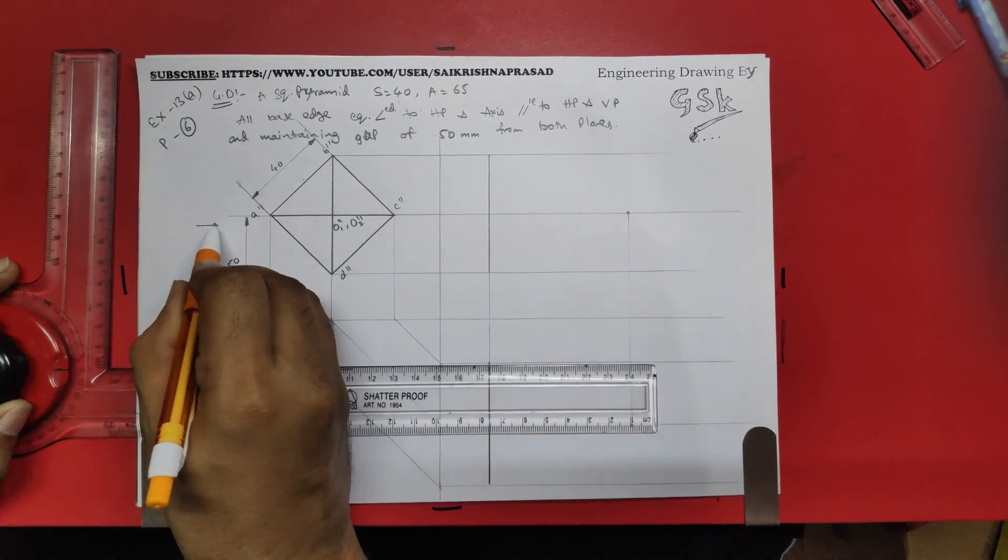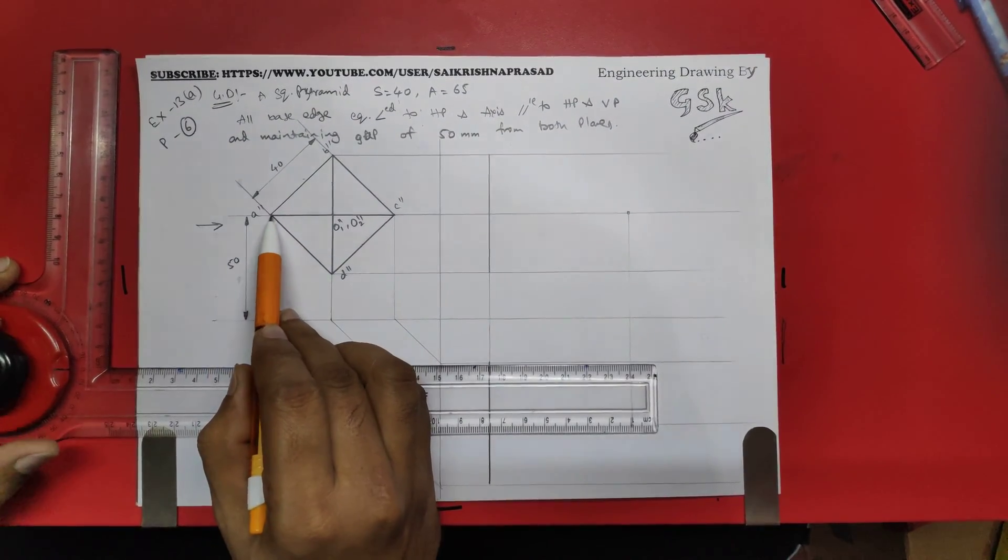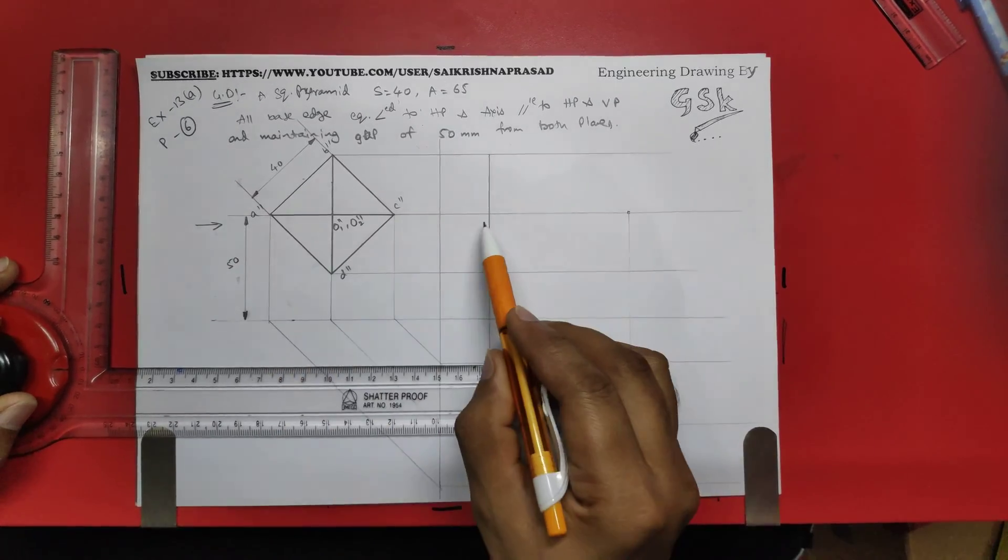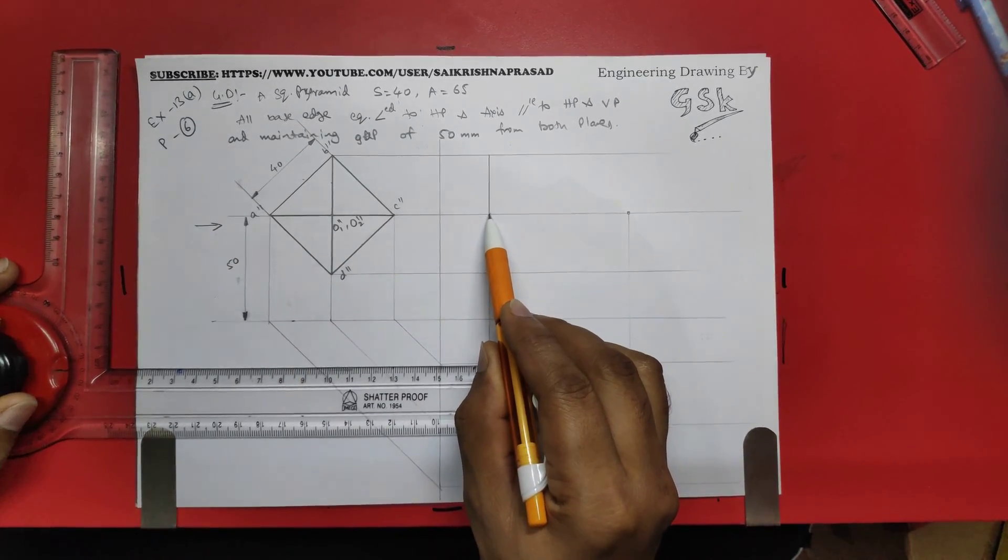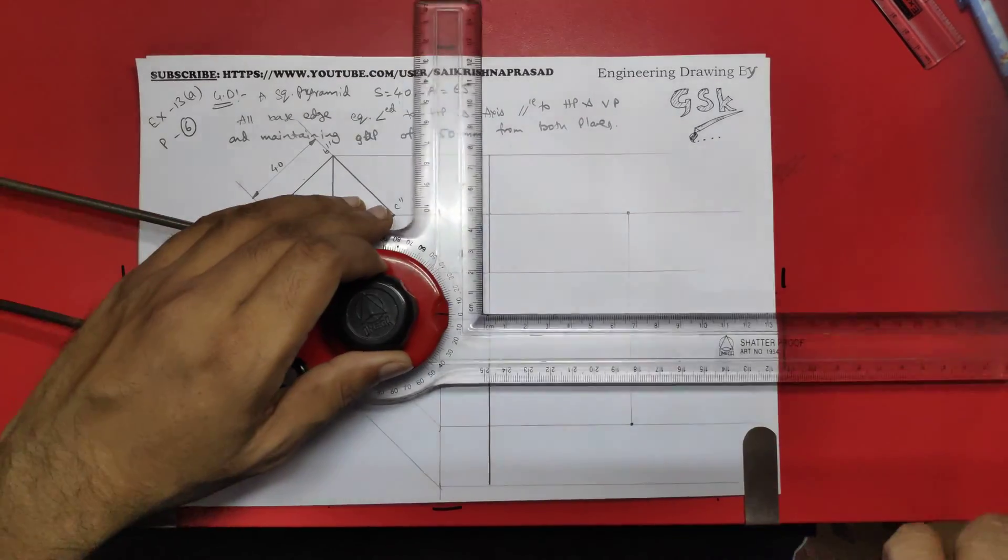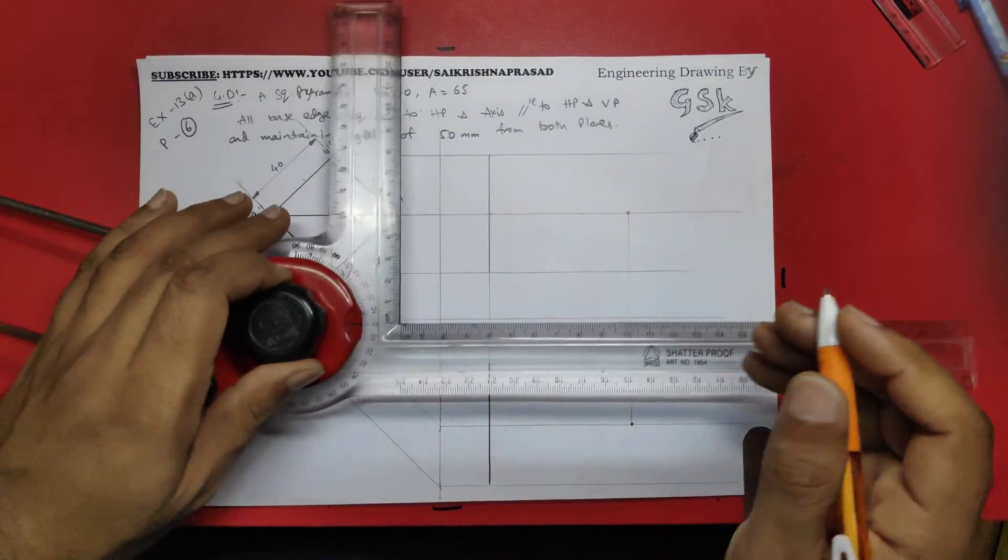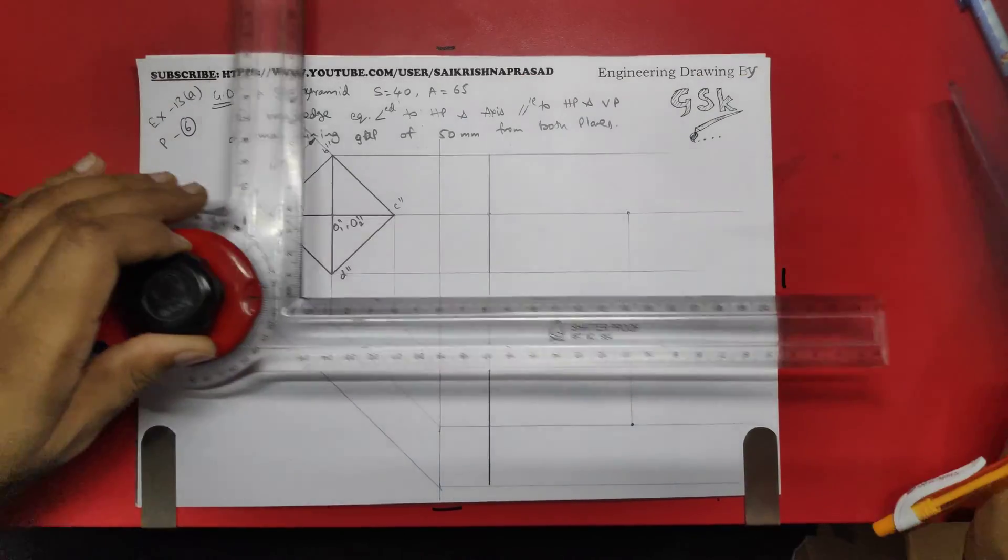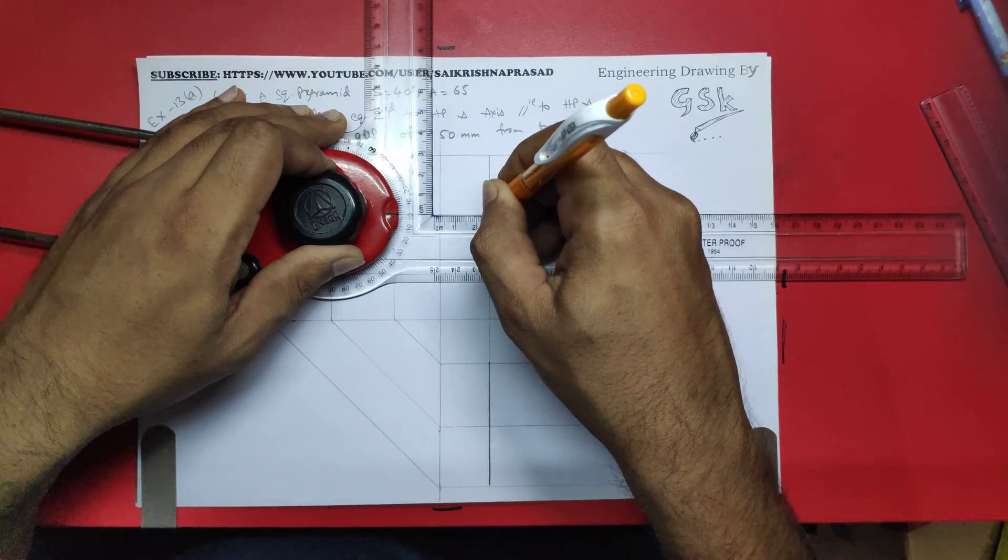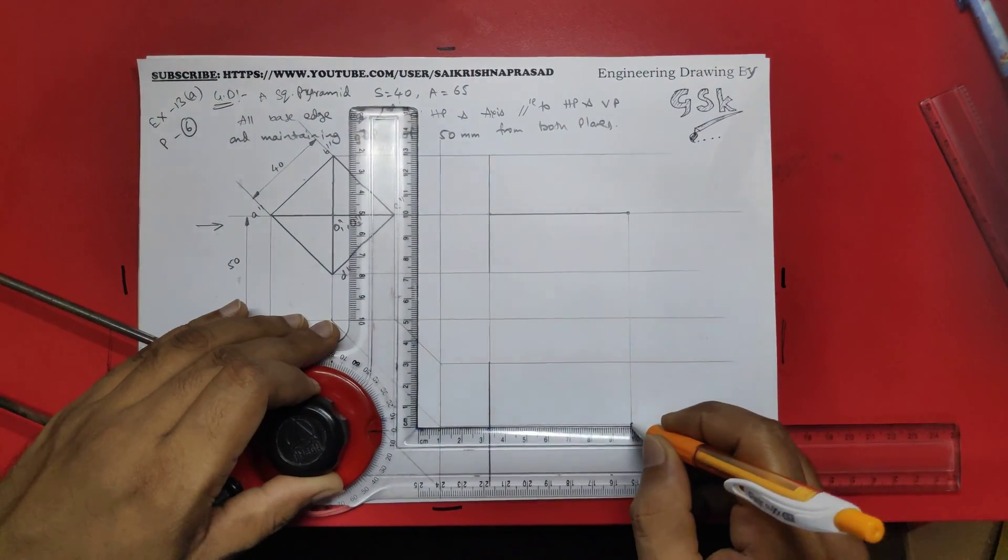Here when you project from this direction, you can see this A' and O1 line. So this one would be the A1 and C then O1. Same here.